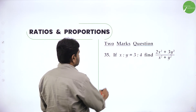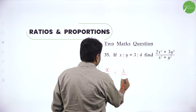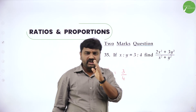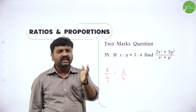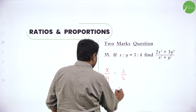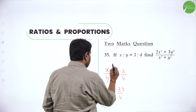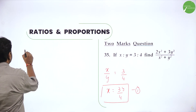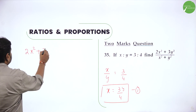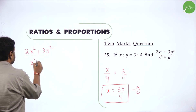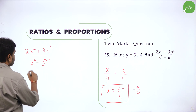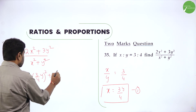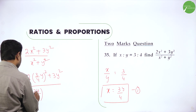And then x is to y is 3 is to 4. So x by y is given as 3 by 4. They want 2x² plus 3y² divided by x² plus y². When you want to simplify with two variables x and y, find one variable in terms of the other. I will get x value — x equals 3 by 4 times y. So x is equal to 3y by 4. Now substitute this.